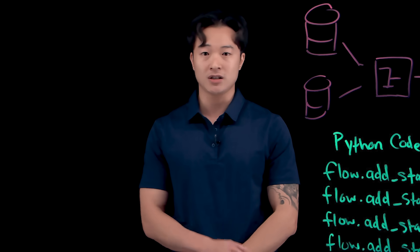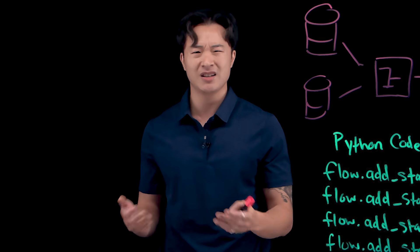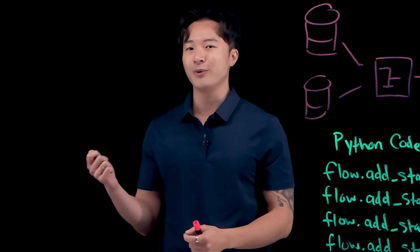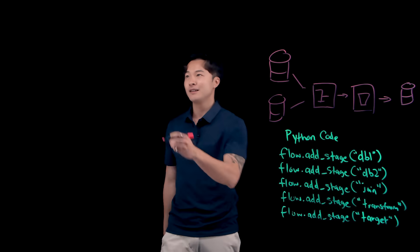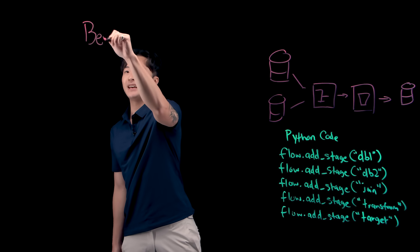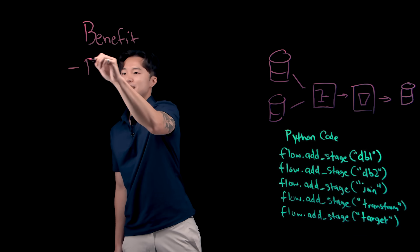Updating connection strings across 100 pipelines in a GUI could take days. With Python, a single script can make these changes in minutes. The benefit of this SDK is that we can bulk update.